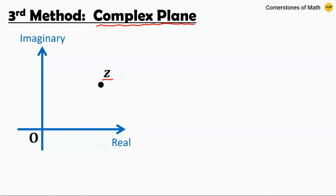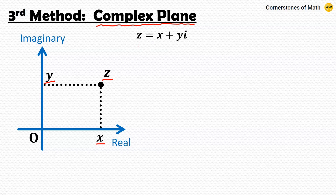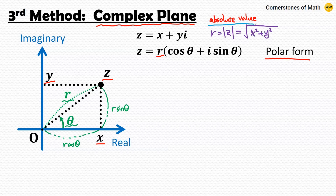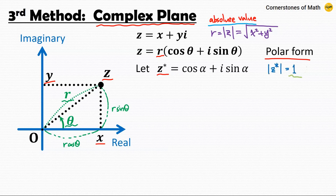Any complex number z can be represented as a point on a two-dimensional plane — the complex plane. There are two ways to write this complex number. The first is by using a real part and imaginary part: when z has real part x and imaginary part y, we write z = x + yi. The other method is by using the distance r between point z and the origin and the angle theta with the real axis. Then we write z = r(cosine theta + i sine theta), called the polar form. The similarity with the polar coordinate system is clear. Here, r is also called the absolute value of z.